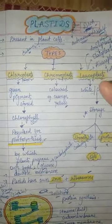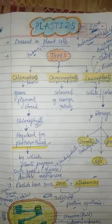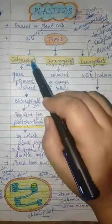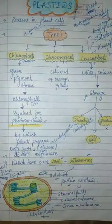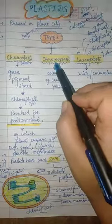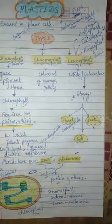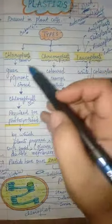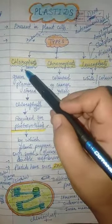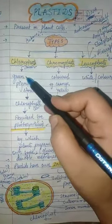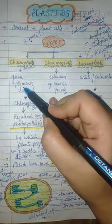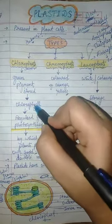There are three types of plastids. The first one is chloroplast, the second one is chromoplast, and the third one is leukoplast. Chloroplast helps in the storage of the green pigment chlorophyll, which is required for photosynthesis.